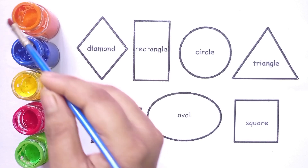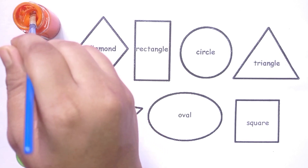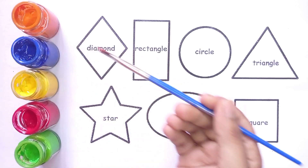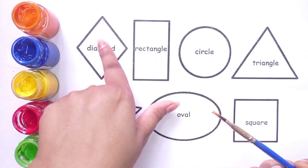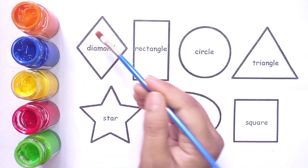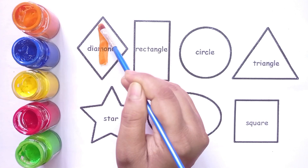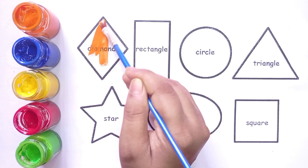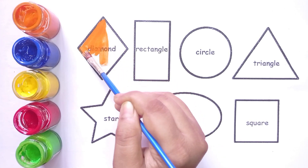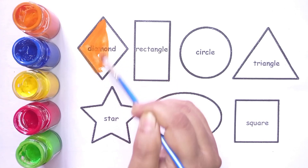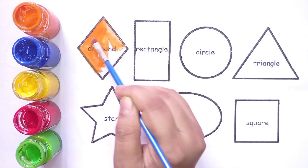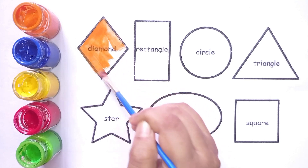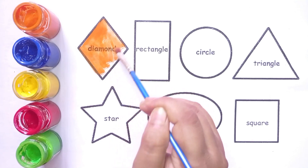This is diamond shape. This is a diamond. Orange color.